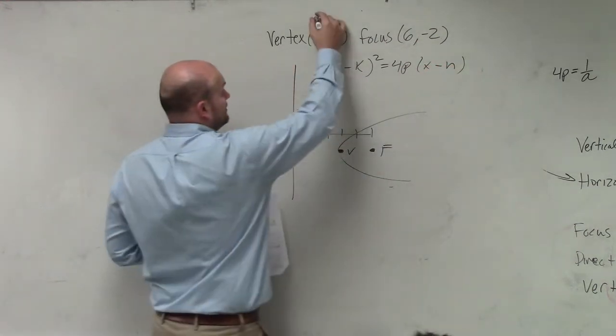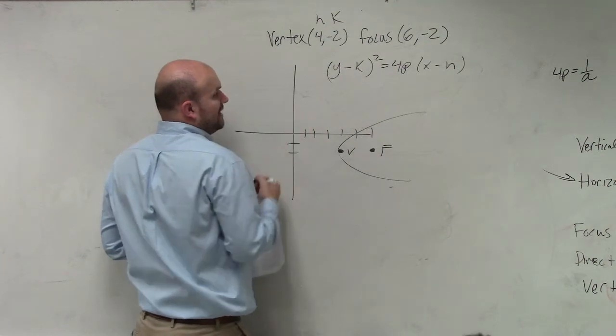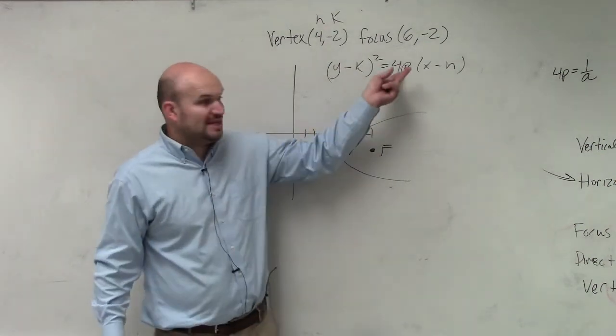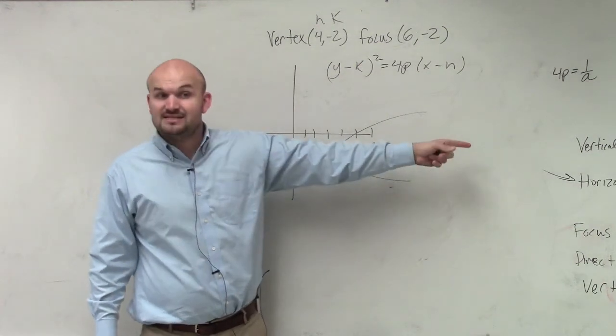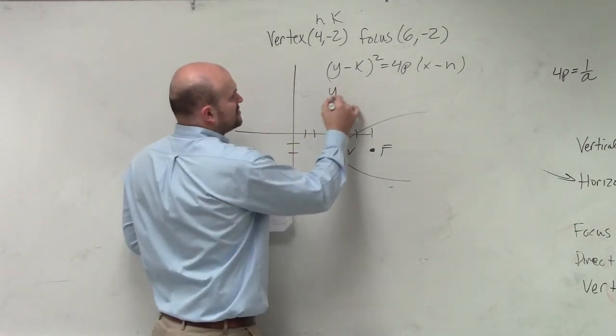Now, do I have my h and my k? Yes, right? And do I know the distance, do I know p? How far is it from the vertex to the focus? 2. And since it's going to the right, it's positive. So all I need to do is just plug in the information.